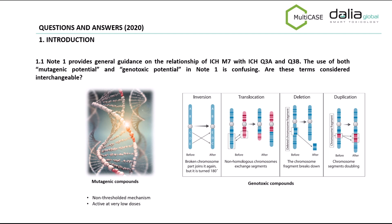The first question included in the Q&A document deals with the differences between mutagenicity and genotoxicity potential. Mutagenicity refers to the alteration of the DNA base sequence. Meanwhile, genotoxicity can be defined as the ability to cause damage to genetic material and chromosomes. Genotoxicity is a more complex process that can occur due to mutagenic processes or for indirect mechanisms such as the alteration of the enzymes involved in replication. Mutagenic impurities are active at very low doses, thus the M7 guideline focuses specifically on them.